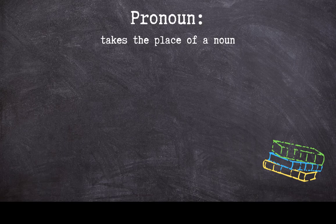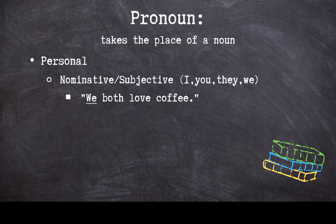There are a few different types of pronouns. Personal pronouns refer to people. The first type of personal pronoun is a nominative pronoun, though they can also be called subjective since they identify subjects of a sentence — two different names, same pronoun. I, you, they, and we are all nominative or subjective pronouns. In our example sentence, 'we both love coffee,' 'we' shows who exactly loves coffee.